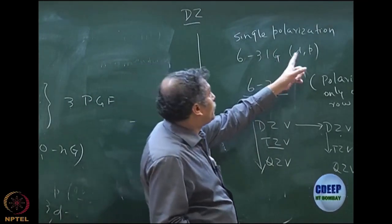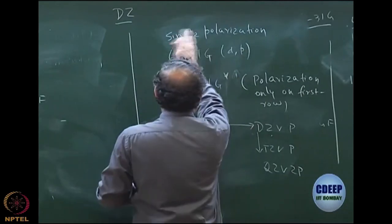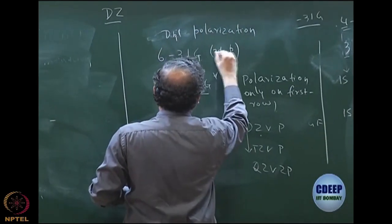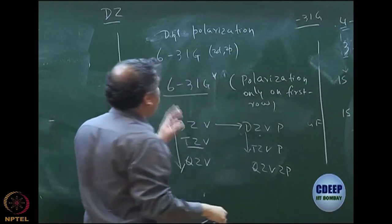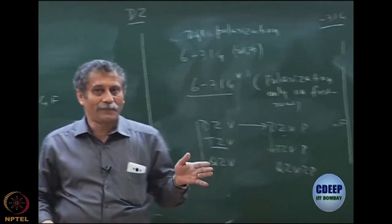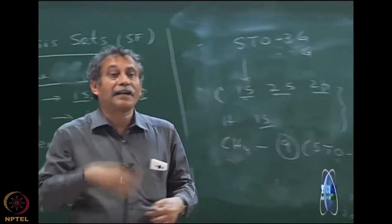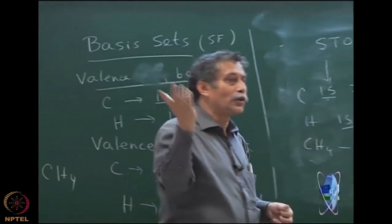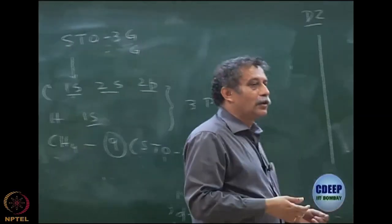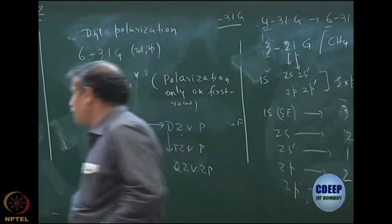You can have one D and one P function — that is single polarization. You can also have double polarization: two D functions and two P functions. You can have polarization beyond D and P — F, G — and those are part of what are called augmented basis sets. There is also something called correlation-consistent basis sets, cc-pVDZ.